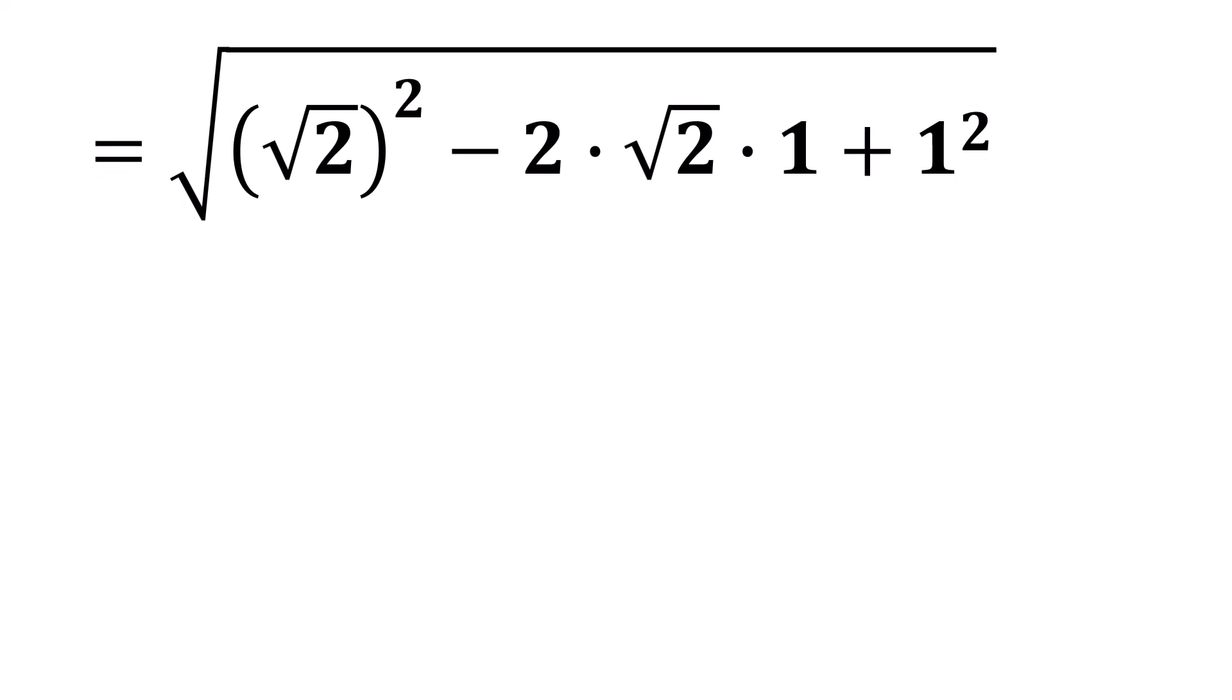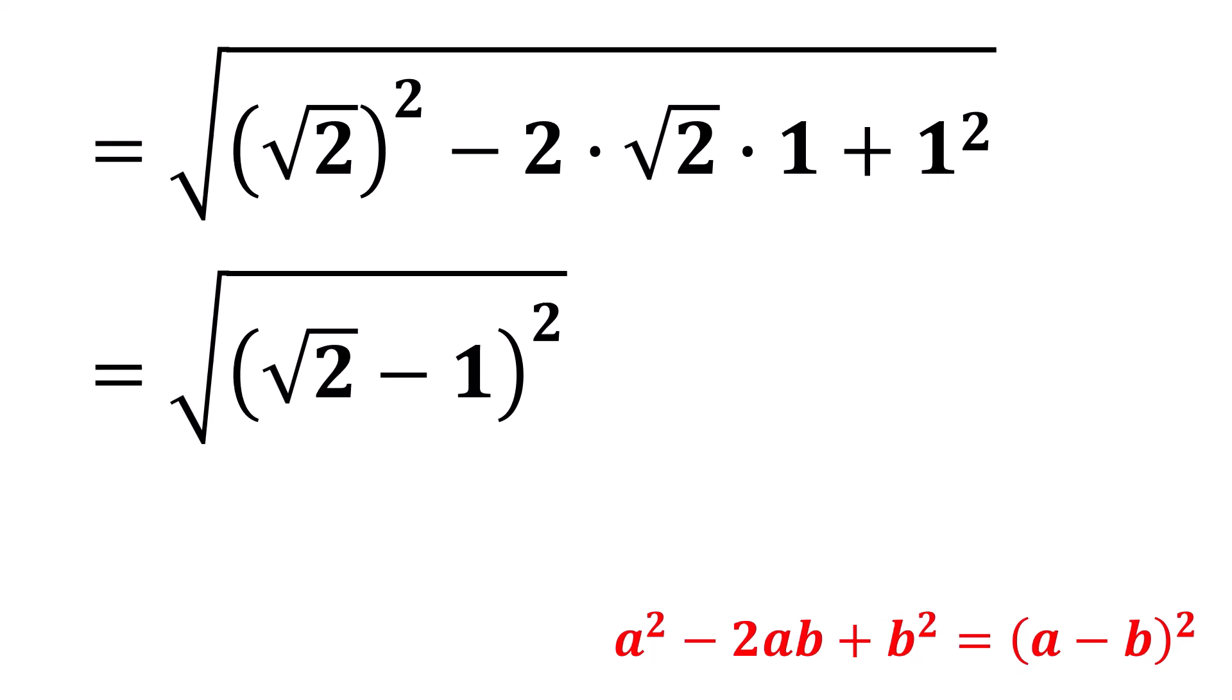Now, applying the algebraic identity, we can rewrite it as the square root of the square root of 2 minus 1 whole squared. Applying the identity here, we finally get the square root of 2 minus 1. And that is our solution.